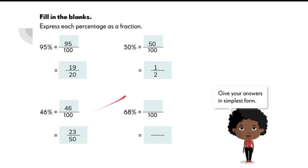And lastly, we have 68%, which is the same as 68 over 100 or 17 over 25. Were you able to express all your answers in simplest form correctly?